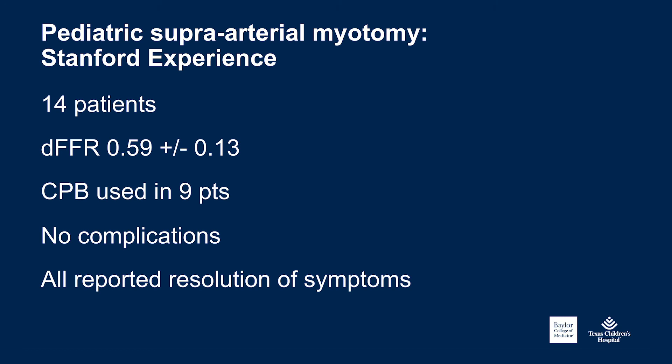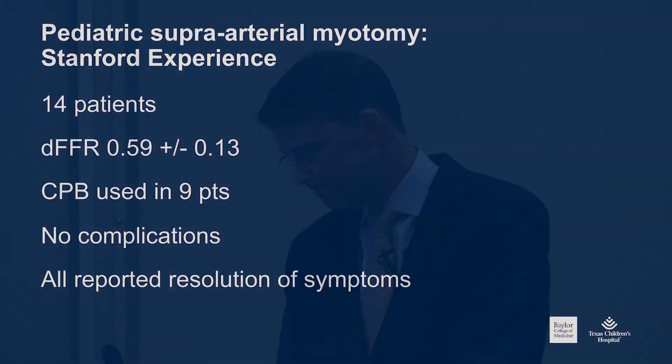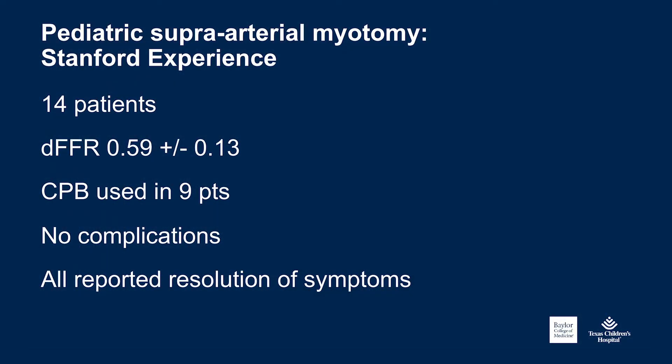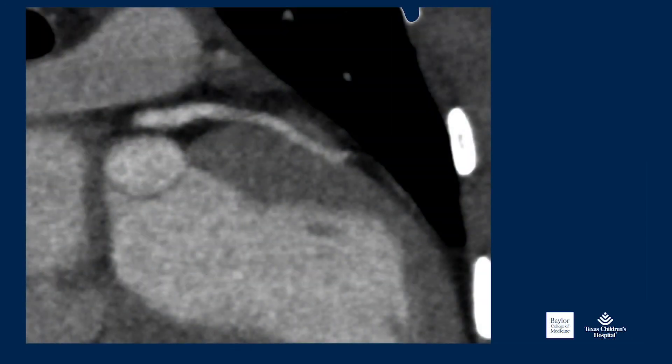The largest reported experience with pediatric supra-arterial myotomy, as Dr. Rogers just mentioned, involved 14 patients — all with significant FFR abnormalities. The first patients were done with bypass; the last five were performed without cardiopulmonary bypass. None of the patients had any complications, suggesting it can be done safely, and all patients reported resolution of their symptoms.